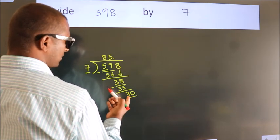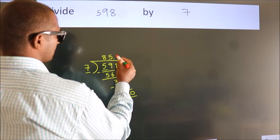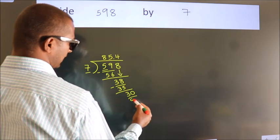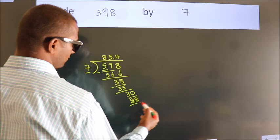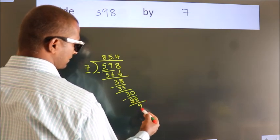A number close to 30 in the 7 table is 7 times 4, which is 28. Now we subtract. We get 2.